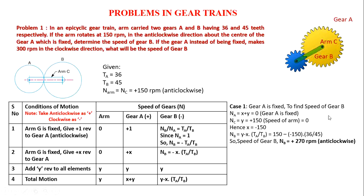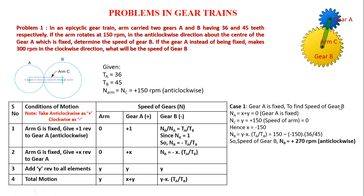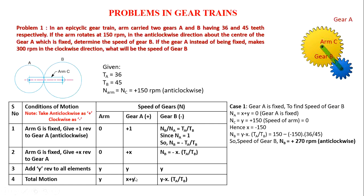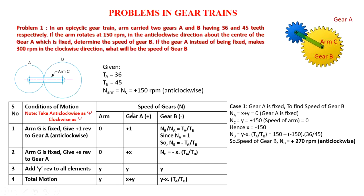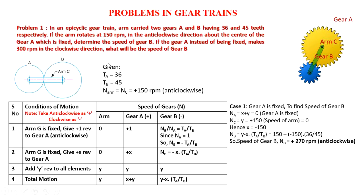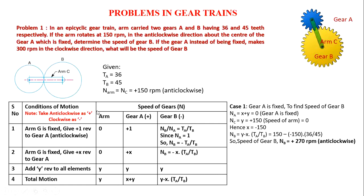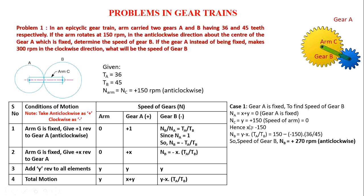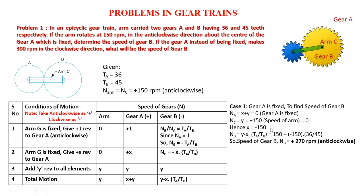For the first case, gear A is fixed. The algebraic expression for gear A is X plus Y, and since gear A is fixed, X plus Y equals zero. The arm rotates at 150 RPM anticlockwise, so Y equals plus 150. From these two equations, X equals minus 150.